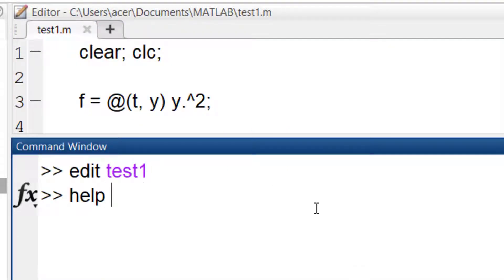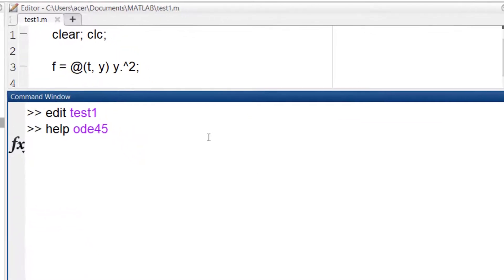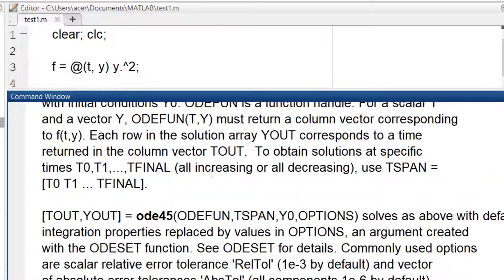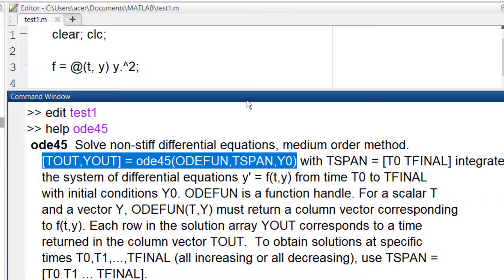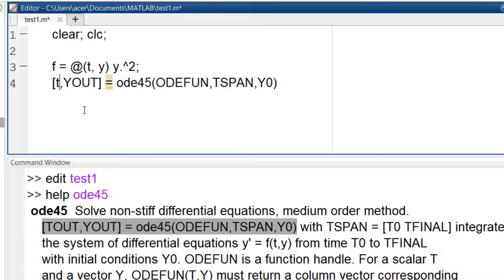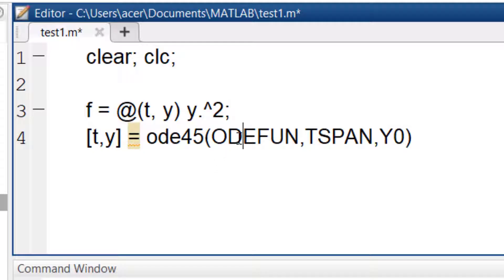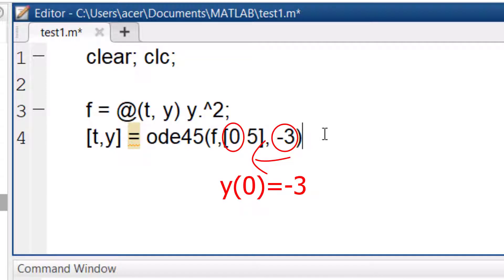Now I type help ODE45 to see the general form of using it. t out and y out are the resulting t and y solutions. ODE fun is the function handle we just defined, t span is the interval of integration. I want to solve from 0 to 5. And this is the initial value, minus 3. Remember that this initial value is always associated with the beginning of your time span.